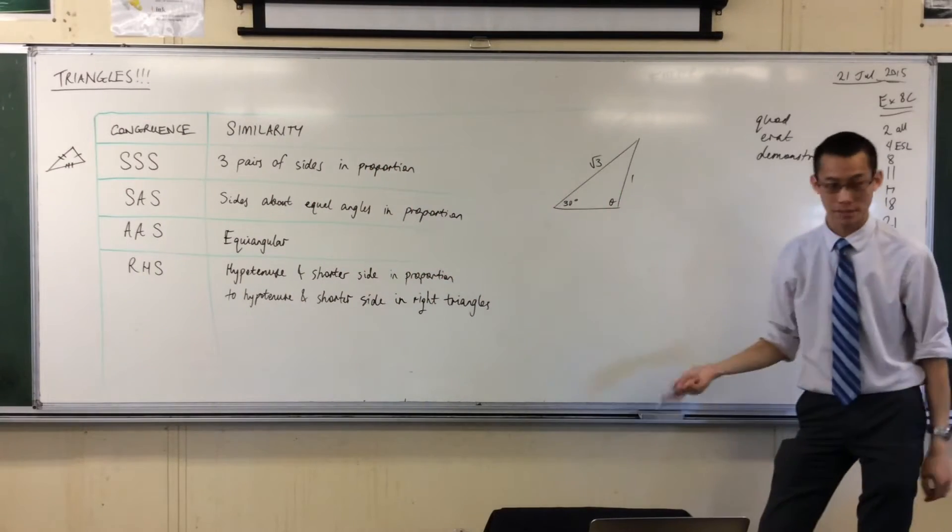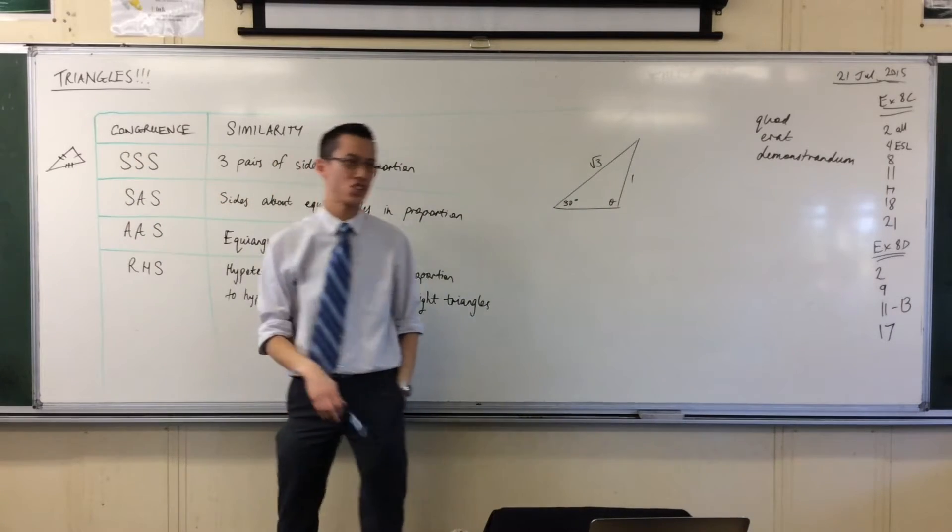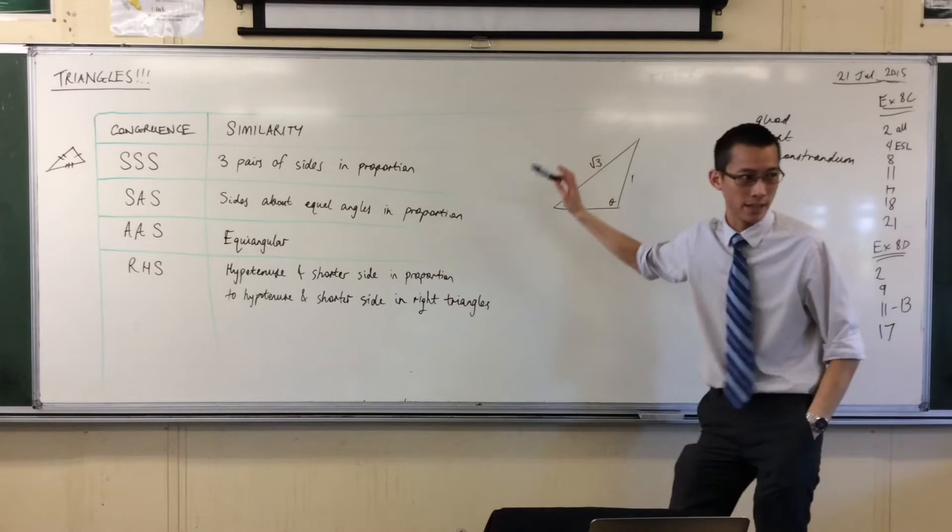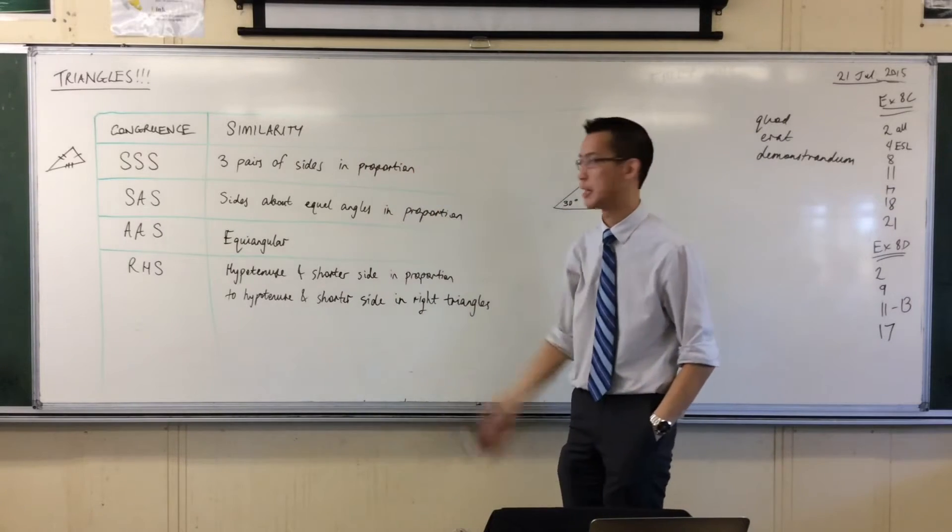And the corresponding proof for similarity is you still have three pairs of sides that correspond but they're just not equal, they're just in proportion. Like all of these ones are twice as big as that, or all of them are three times as big as that.